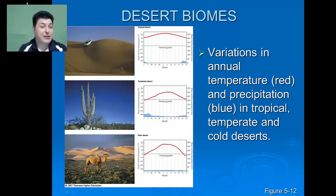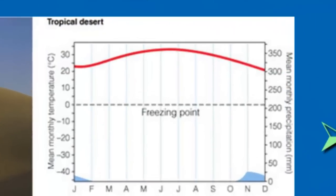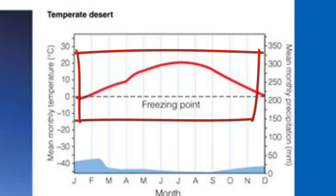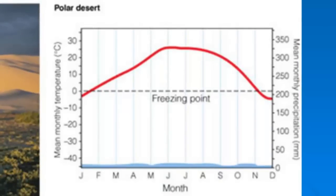When we examine a climatogram for the desert biomes, we're going to see some particular patterns. No matter if it's a tropical desert, temperate desert, or a polar desert, there is very sparse precipitation throughout the course of the year. Tropical deserts are going to be consistently high in temperature. Temperate deserts will see seasonal changes, where in the winter it's kind of cold and dry, whereas in the summer it's hot and dry. Polar deserts will also see some seasonal changes, but the temperature gets much colder during the winter months.